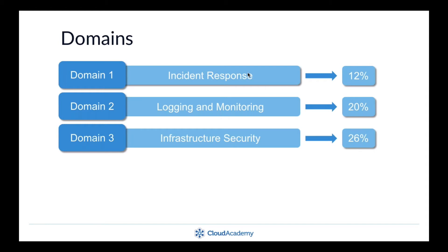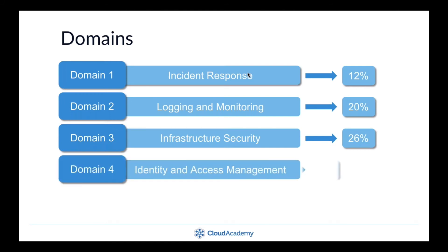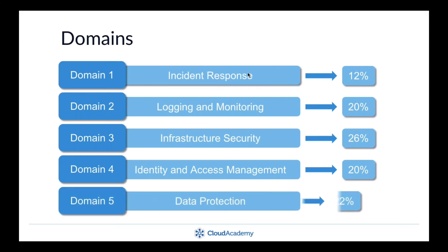In a moment I'm going to break down each of these domains further to identify exactly what they expect you to know. The fourth domain is identity and access management, and that equates to 20%.